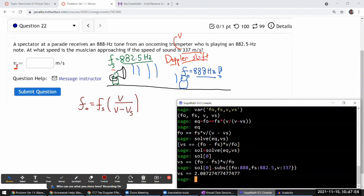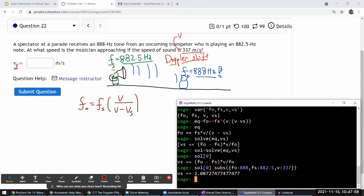And the speed of sound is 337 meters per second. Yeah, so with that, we get the answer. The speed of the source was 2.09 meters per second.